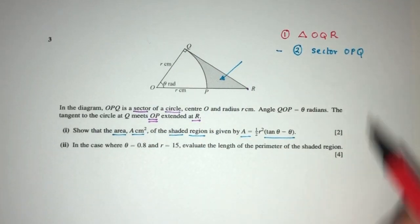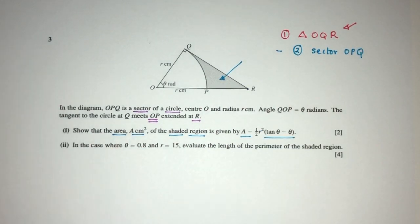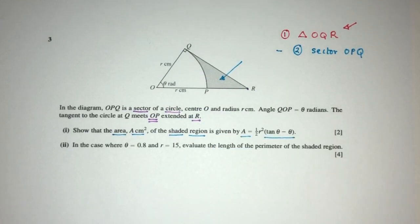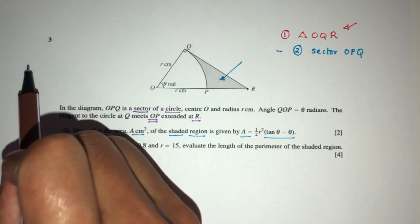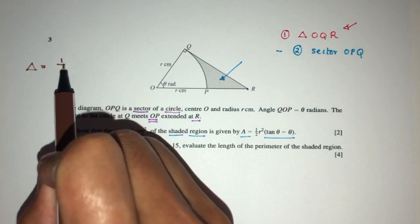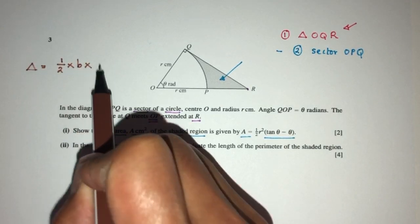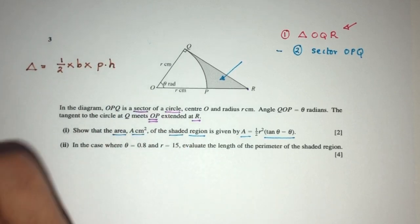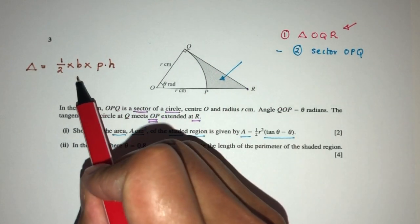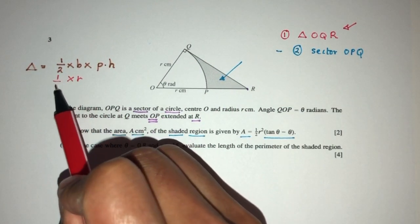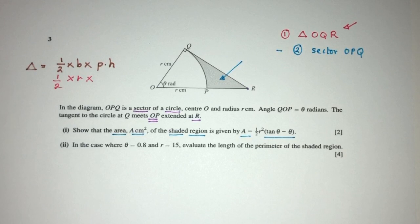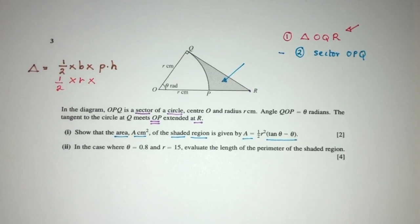Now, how can you find the area of a triangle? We observe that we have a right-angled triangle here. Whenever we have a right-angled triangle, we can use the formula: half times base times perpendicular height. The base is R, and we have to find the perpendicular height. We can find this using SOHCAHTOA because it is a right-angled triangle.